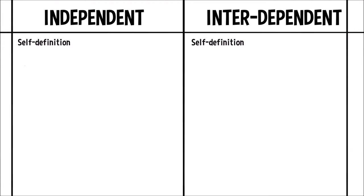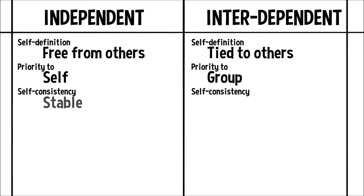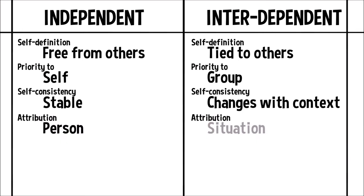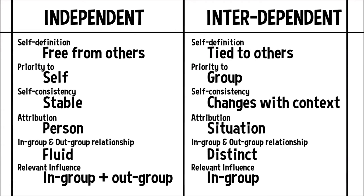So where does that leave us? In summary: self-definition is either free from others or tied to others; priority is placed on either the self or the group; self-consistency is either stable or changes with context; attribution is made to the person or the situation; and in-group and out-group relationships are either fluid or distinct, with relevant influence coming from both in-group and out-group, or just the in-group.